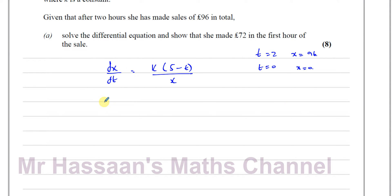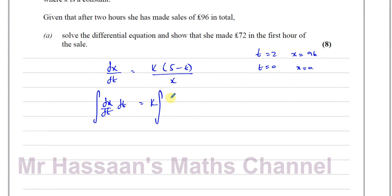To solve the differential equation, I want to find what x is in terms of t. Whatever is on the top here as dx/dt, we're going to end up with x equals some function of t. So I'm going to integrate this side with respect to t, and also integrate the other side with respect to t. I'm going to write the constant outside the integral sign. Whatever I do to one side, I must do the same to the other side.